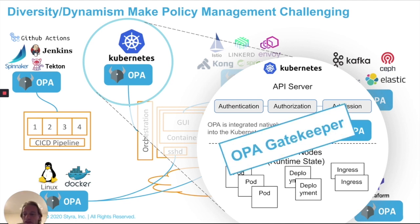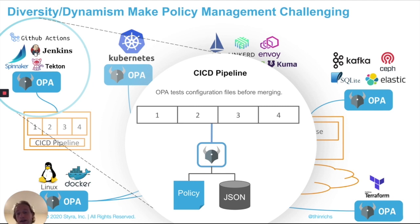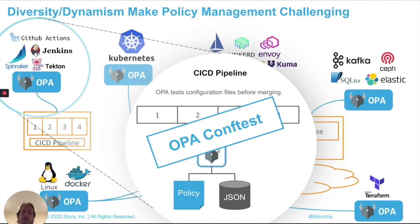This Kubernetes use case has become so popular that it spawned its own subproject within OPA called Gatekeeper — definitely recommend you check it out if you're interested in Kubernetes. A third example is a CICD pipeline, where you set up a job in one stage of the pipeline that runs OPA policies against whatever files somebody might be trying to check into a repository — whether that's Kubernetes resource files or Python INI files. This use case has become so popular that there is a dedicated subproject called Conftest — definitely recommend it if you're interested in running policies over files on a file system.